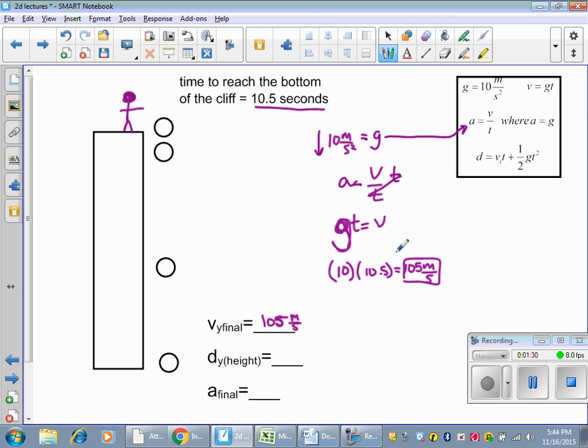My d_y, my height. I have to use the distance equation: d equals v_initial times time plus one-half gt squared. So I'm going to work that out here. My v_initial, I'm going to plug in a zero. If I'm dropping something, it's from rest. From rest equals zero meters per second. That's my initial velocity.